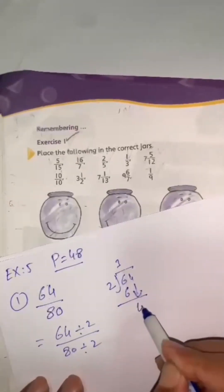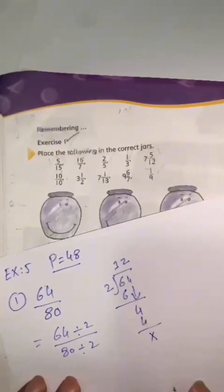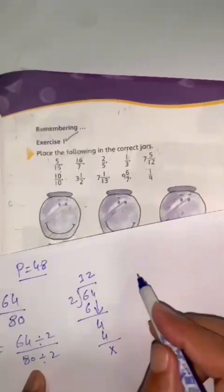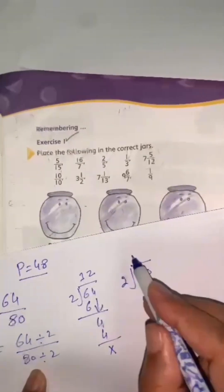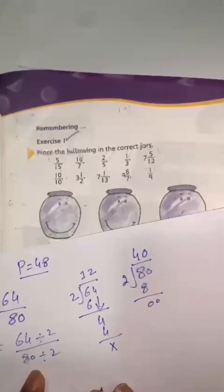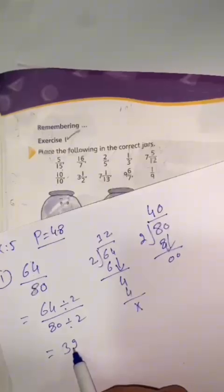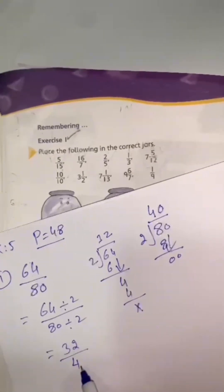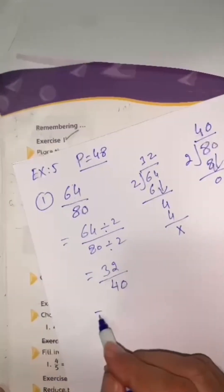Now 4: 2 twos are 4. Next, 80 divided by 2: 2 fours are 8, 0 zero, so 40. Now we have 32 divided by 40. Again they are divisible by a common factor. So again divide by 2.